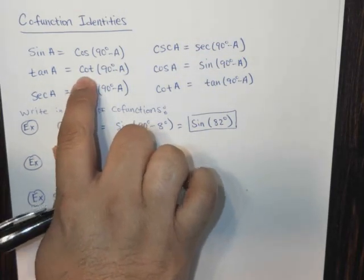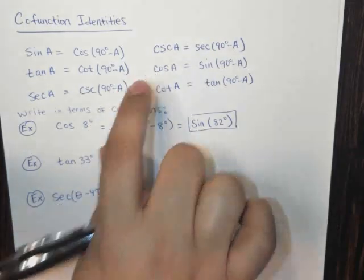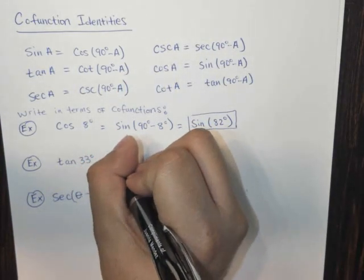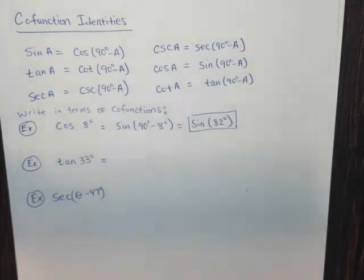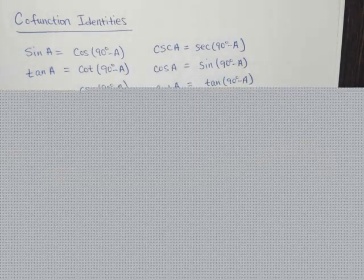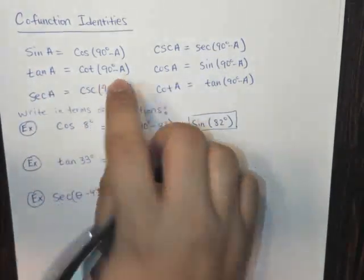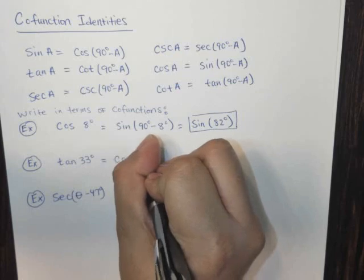We've got the cotangent of 90 minus 33. So let's see what that looks like. So we've got the tangent of 90 minus 33, that means it's the cotangent.